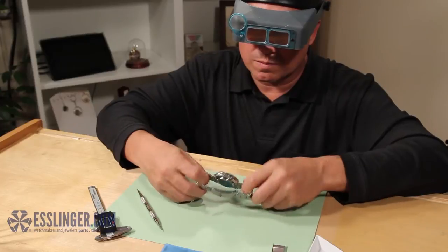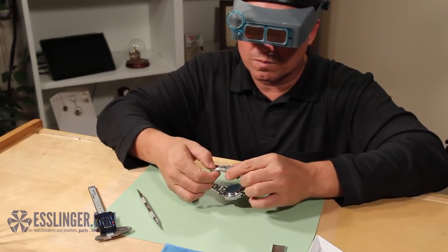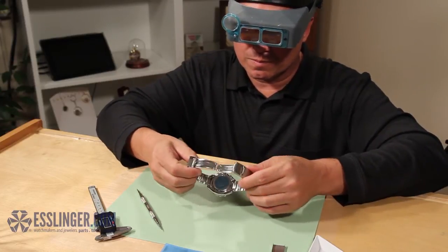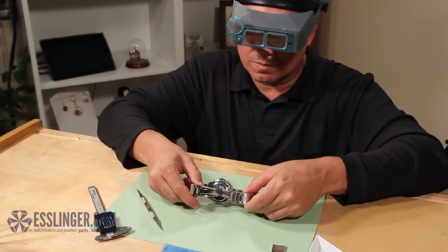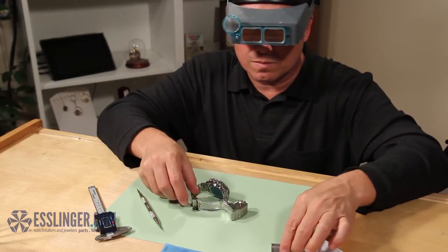Before you can add a buckle extender, you must first disconnect one side of the clasp from the watch band. The extender will attach to the side of the clasp opposite from where it latches closed.